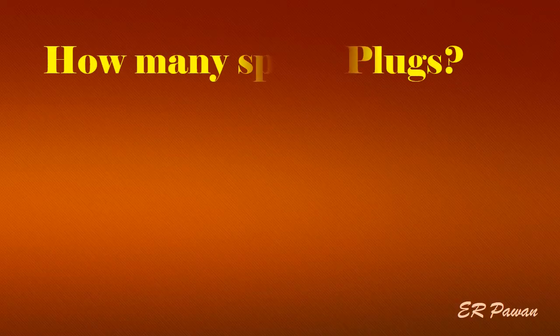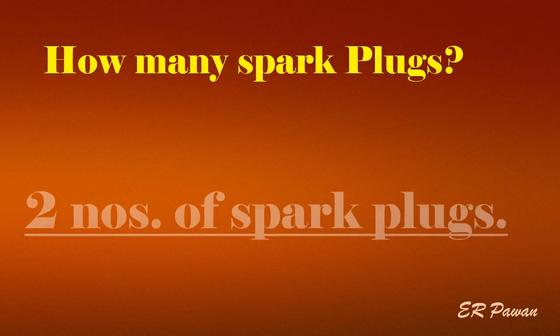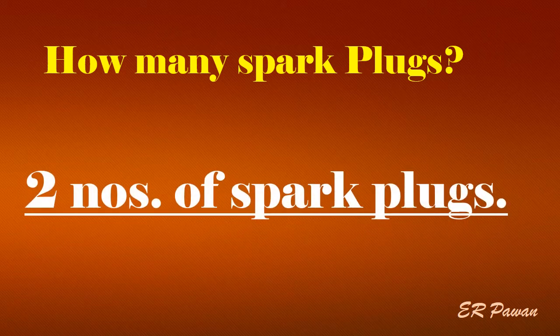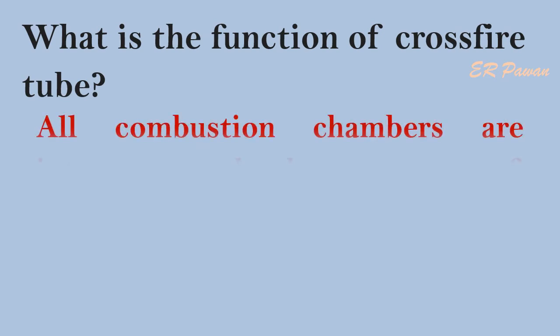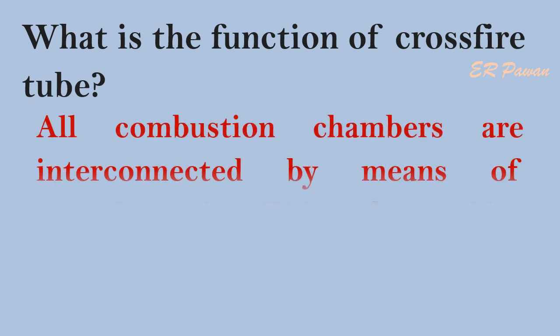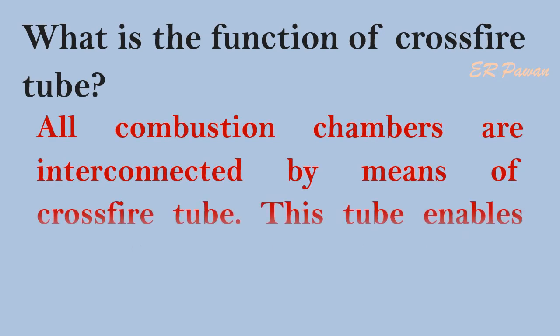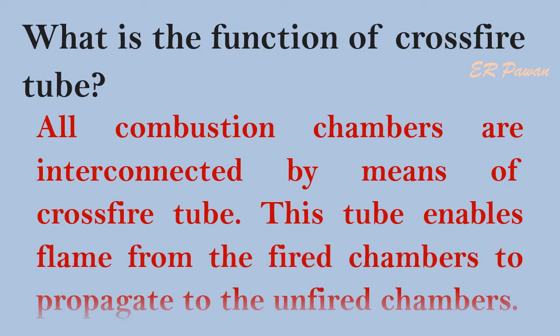How many spark plugs are used in the turbine? 2 numbers of spark plugs. What is the function of the cross fire tube? All combustion chambers are interconnected by means of a cross fire tube. This tube enables flame from the fired chambers to propagate to the unfired chambers.